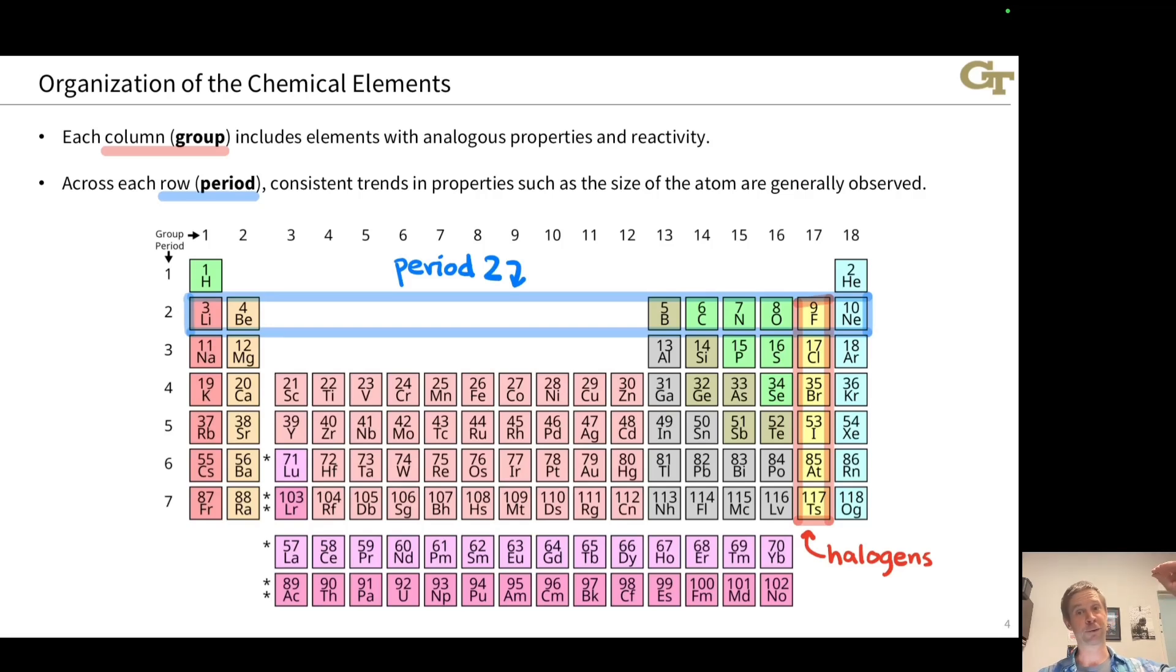Maybe it consistently goes up or consistently goes down, but that trend resets when we get to the next row, and so the elements display what we call periodicity in their properties. A property goes down until we hit the end of a period, and then when we go from the end of one period to the beginning of another, that property kind of resets, and then it goes down again, and so graphs of the properties of the elements as a function of atomic number have a periodic appearance, something that you'll see in more detail in your introductory chemistry course.